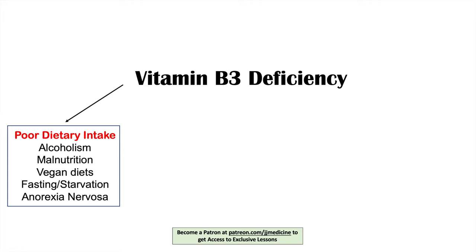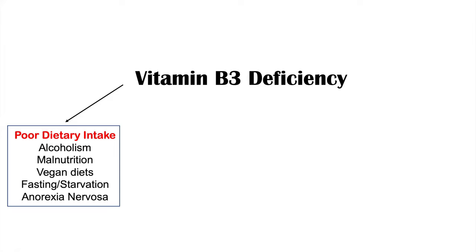What causes vitamin B3 deficiency? We get vitamin B3 from dietary sources and liver synthesis from tryptophan, so both play roles. The first category is poor dietary intake. If you're not eating enough niacin or tryptophan, you'll have low vitamin B3. This includes chronic alcoholism — where individuals often don't eat enough — malnutrition, certain vegan diets (since much B3 comes from meat and fish), fasting, starvation, and anorexia nervosa.